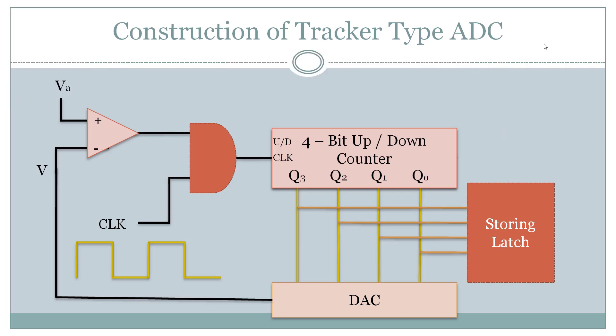Now, an up-down counter needs two types of input. One is clock and the other is a signal to count up and down.